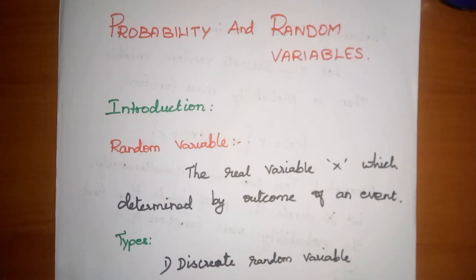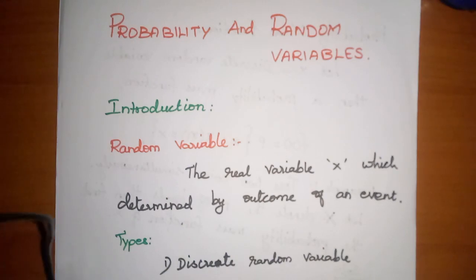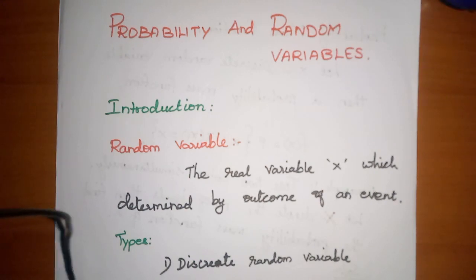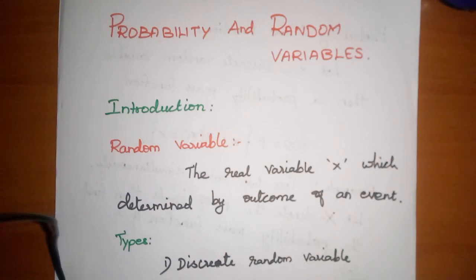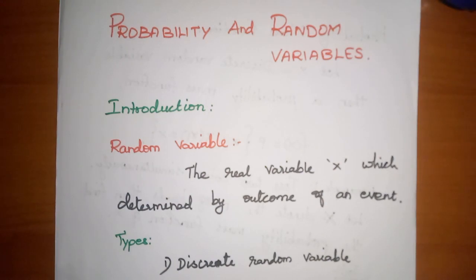We will start with probability basics that we learned in school days. Probability is defined as the number of favorable outcomes divided by the total number of possible outcomes. So to find the probability of a particular event, we divide the value of that event by the overall possible values.